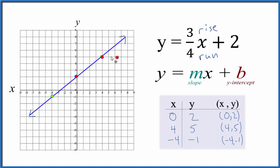Let's do it again. Rise one, two, three, over one, two, three, four. So rise over run. And that shows us that this is the correct graph. This is the correct line for y equals three-fourths x plus two.